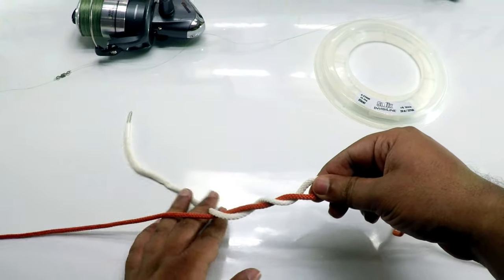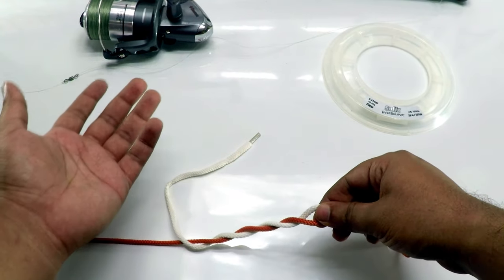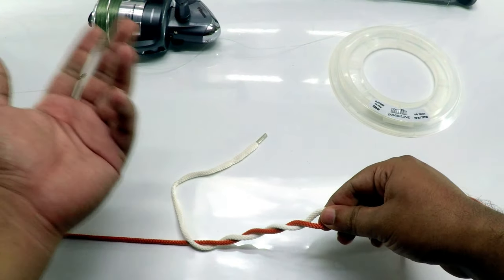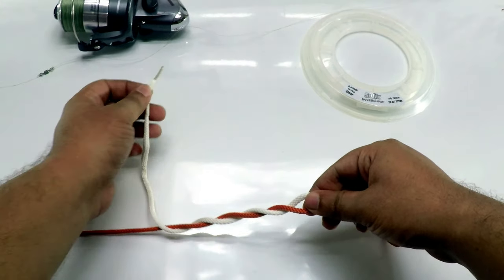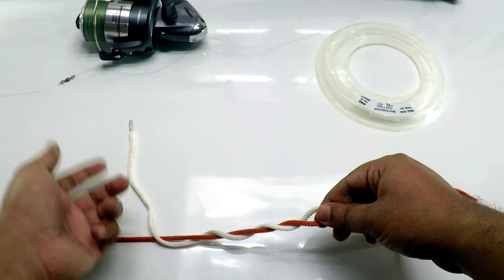I'm doing this four times because this is a thick line, but if you're using 0.40 or 0.35, six times will be fine.